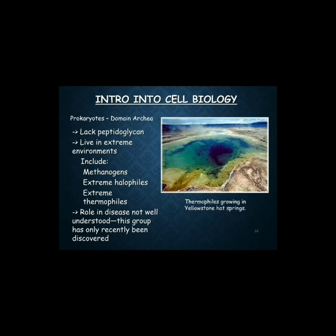In the prokaryotic domain, organisms with peptidoglycan live in extreme environments such as extreme temperatures. This includes methanogens, extreme halophiles, and extreme thermophiles — thermophiles meaning thermal or high-temperature loving species. Their role in disease is not well understood, as this group has only recently been discovered and is not totally elaborated.